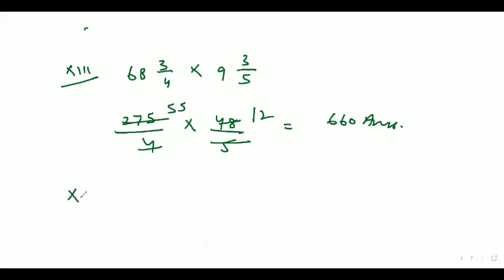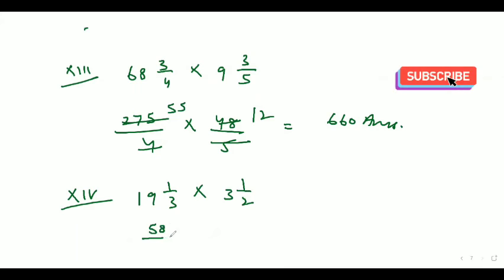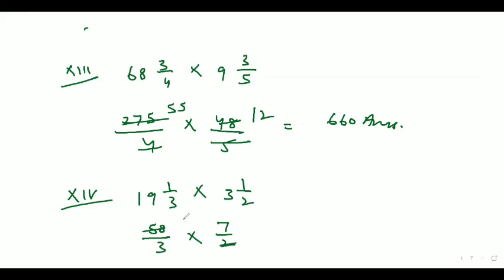Now let's move to the fourteenth part. The fourteenth part is 19 whole 1/3 into 3 whole 1/2, which can be written as 58/3 into 7/2. After cancellation, our answer comes out as 203/3 or 67 whole number 2/3.